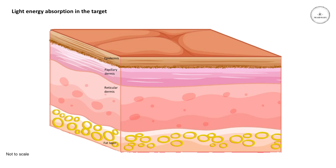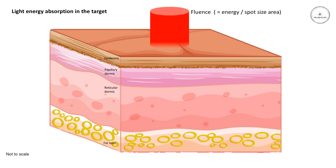Today we're going to talk about light and its progress through the skin. This is not trivial because there are various processes which can occur. When you fire laser or IPL light energy at the skin, it will have a certain fluence or energy density — simply the energy divided by the spot size area. The energy which strikes the skin surface is known as E-naught.